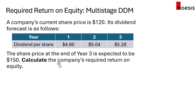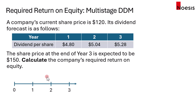So calculate the company's required return on equity. First off, we'll look at the timeline from year 0, which is now, and up to year 3. So at time 0, we will take the price of $120 just like a cash outflow.